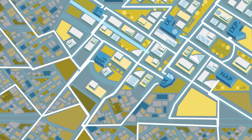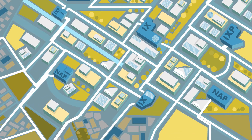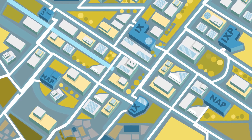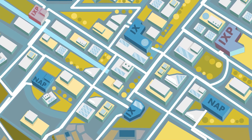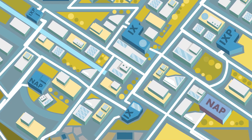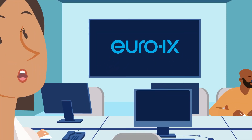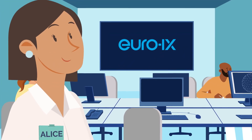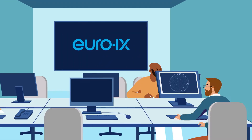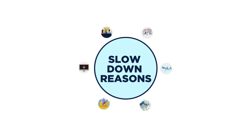Within some of these data centers, we find internet exchange points, sometimes called IXPs, IXers, or NAPs — Network Access Points. Without a nearby IXP connection for your internet provider, it can cause slow and unstable service.